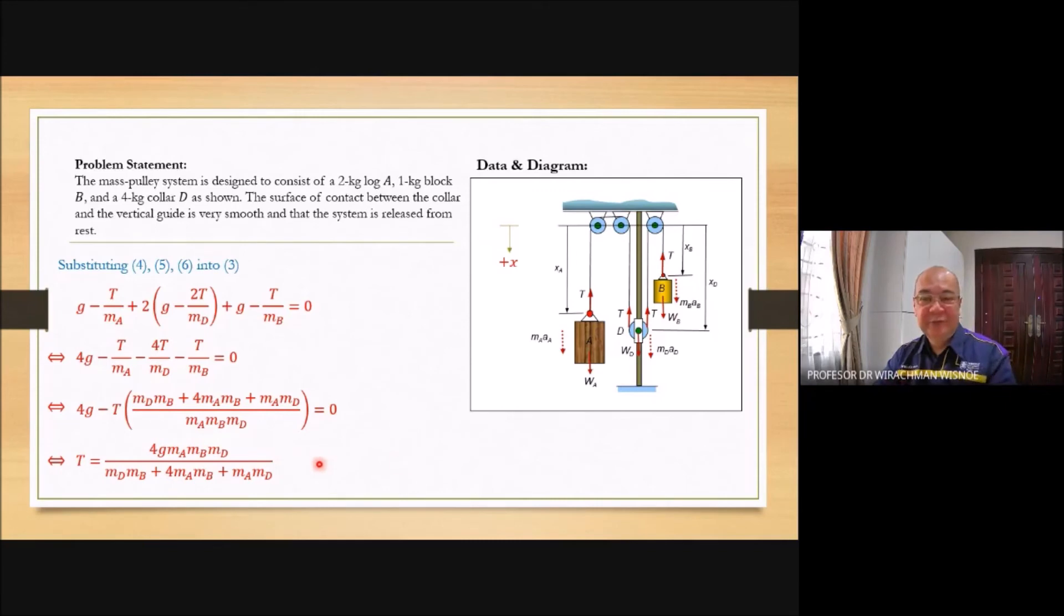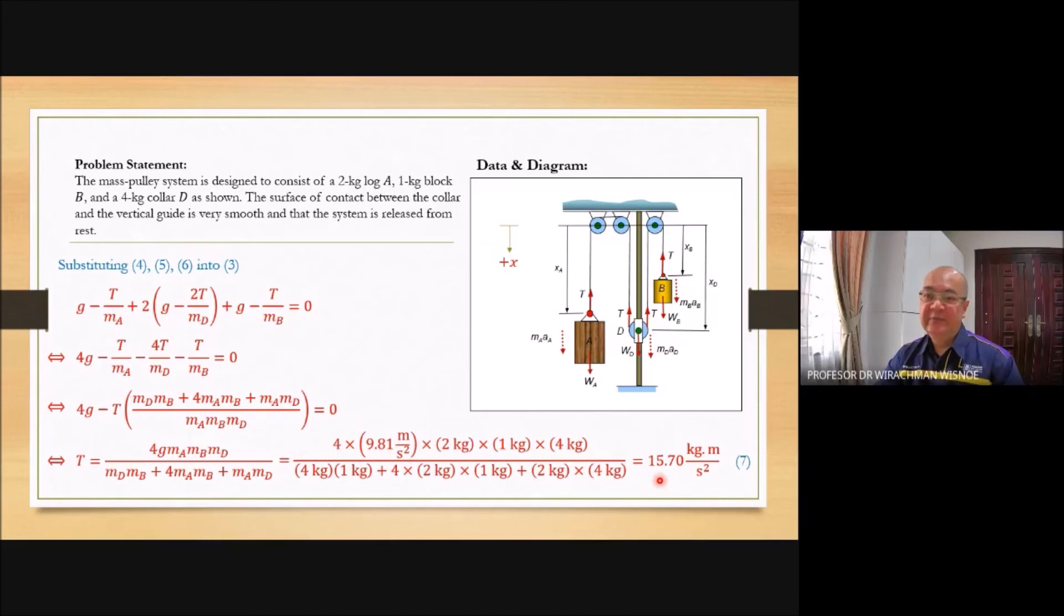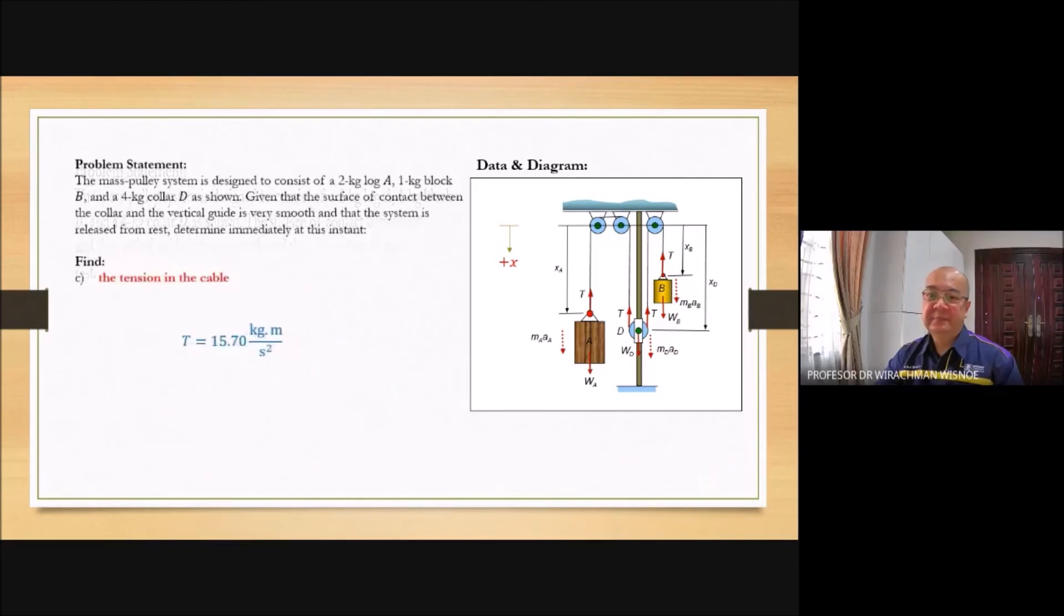T. You can put the values inside. So you obtain the value of T. The tension. Is 15.7 Newton. You can put kilogram meter per second square. Or Newton. It doesn't matter.